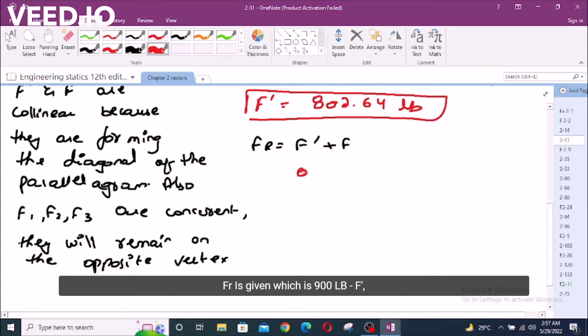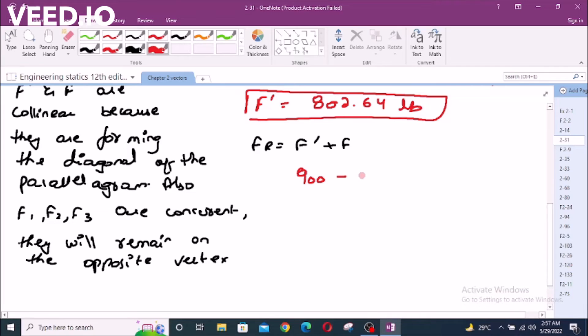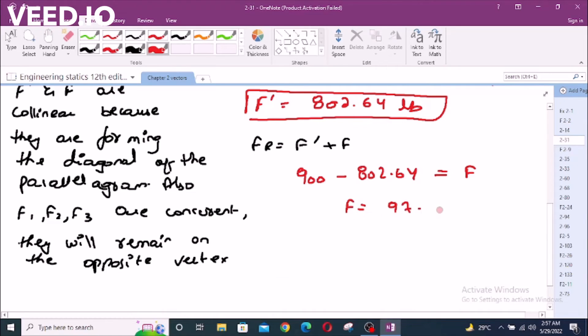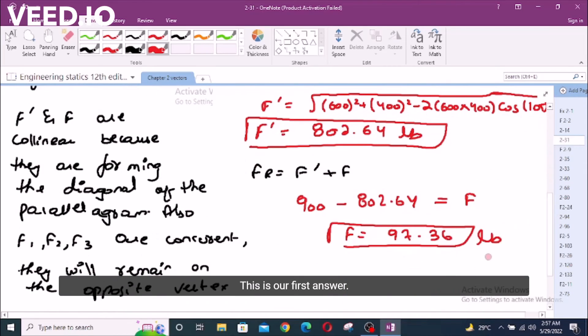This given which is 900 Lb minus F prime 802.64 Lb equals F, which equals 97.36 Lb. This is our first answer.